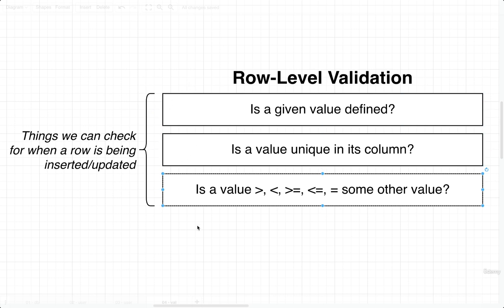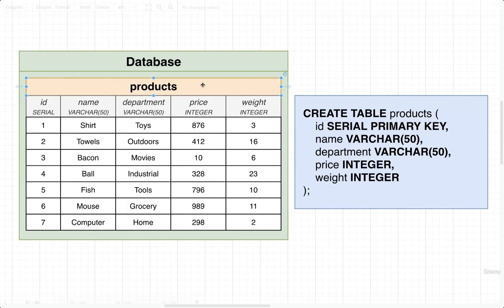We're going to take a look at examples of all three of these different row level validations. To get started, we're first going to create a table without any validation on it whatsoever, then take a look at how easily bad data could be inserted into it. The table we're going to create is the products table, which has served us pretty well so far. We'll create it inside a database, immediately try to insert some bad data, and realize how easily weird values can be put in. But before we can create this table, we have to create a new database inside our local Postgres server.